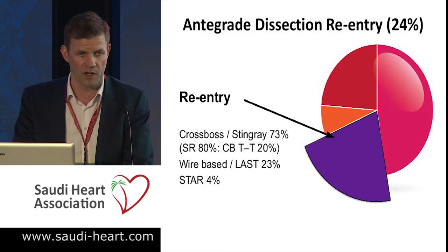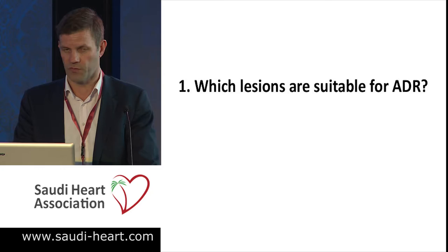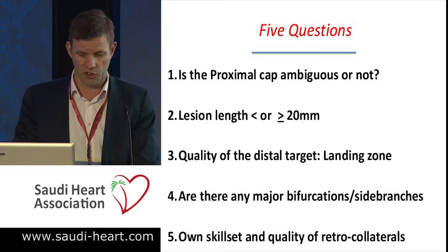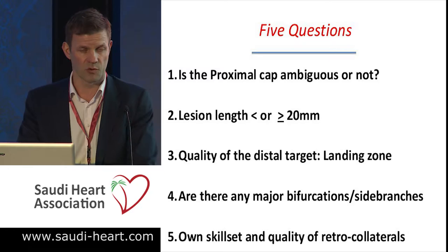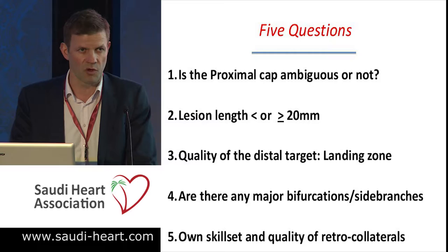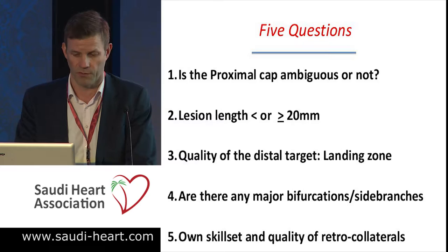When we look at lesions that are suitable, what are we looking for specifically? We want to look at the proximal cap — is it ambiguous or not? How long is the lesion? What is the quality of the landing zone? Is there a good target to re-enter? Are there major bifurcations or side branches we don't want to lose? And what is our own skill set — are we better at retrograde? What are the collaterals like?